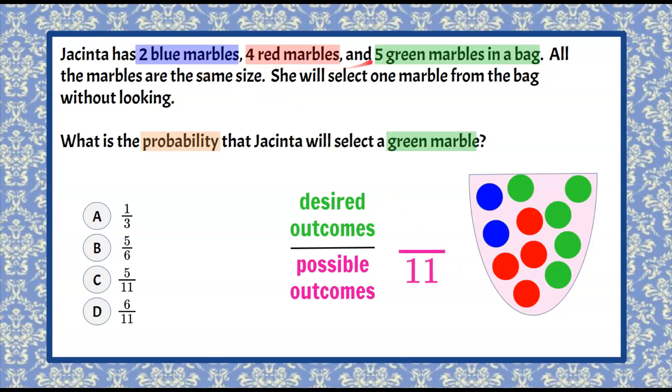Two plus four plus five is eleven. So there's eleven possible things that could happen when she reaches into the bag.